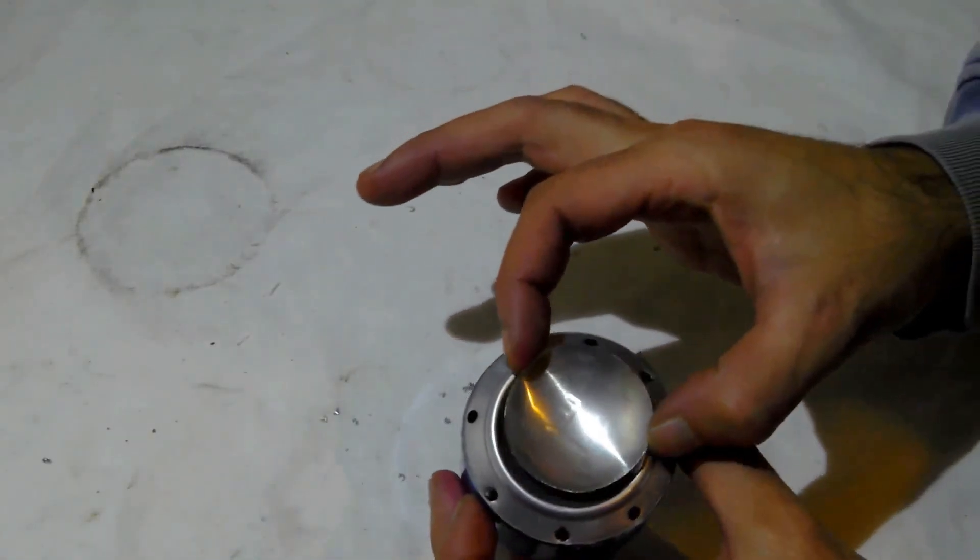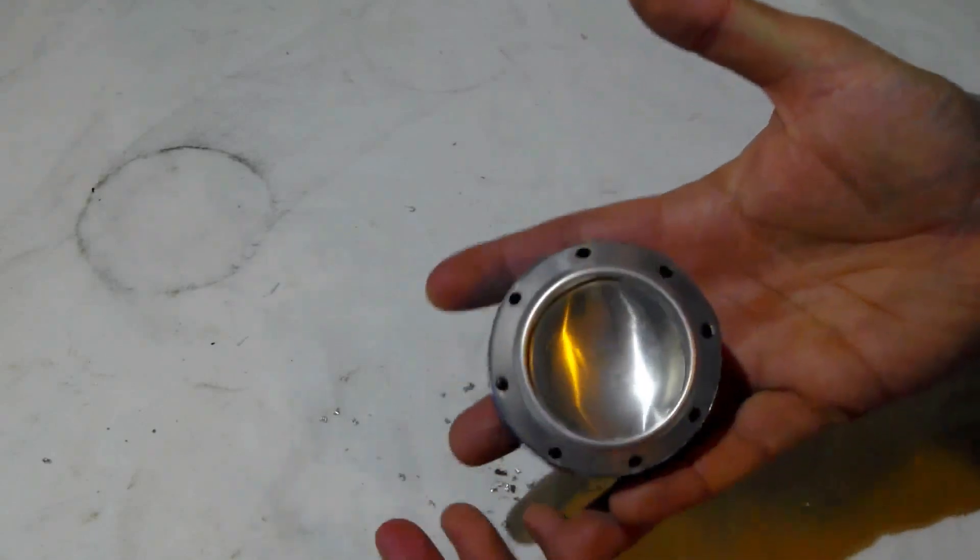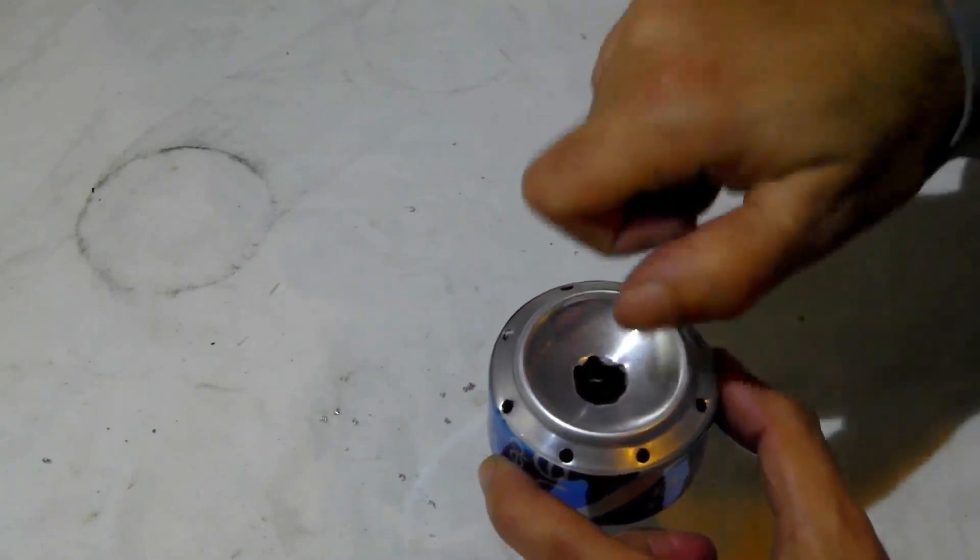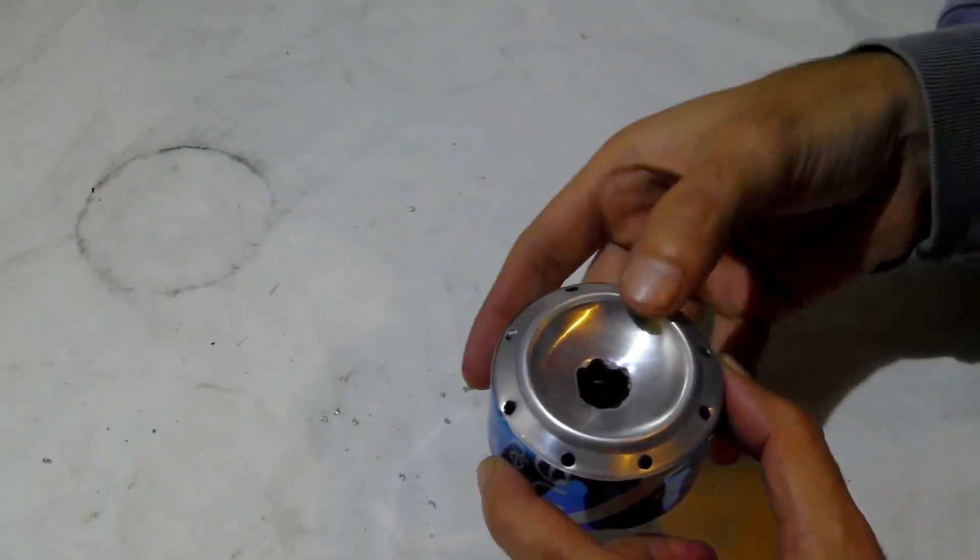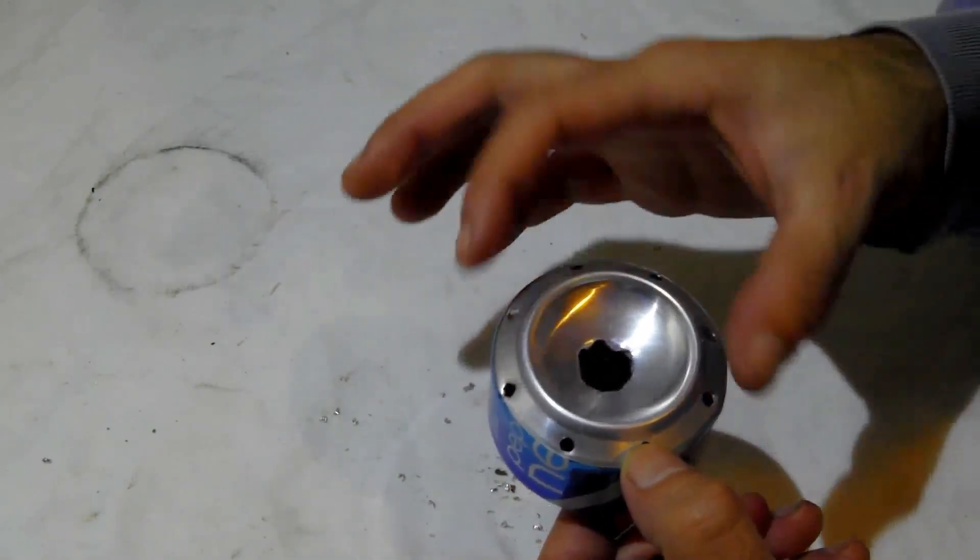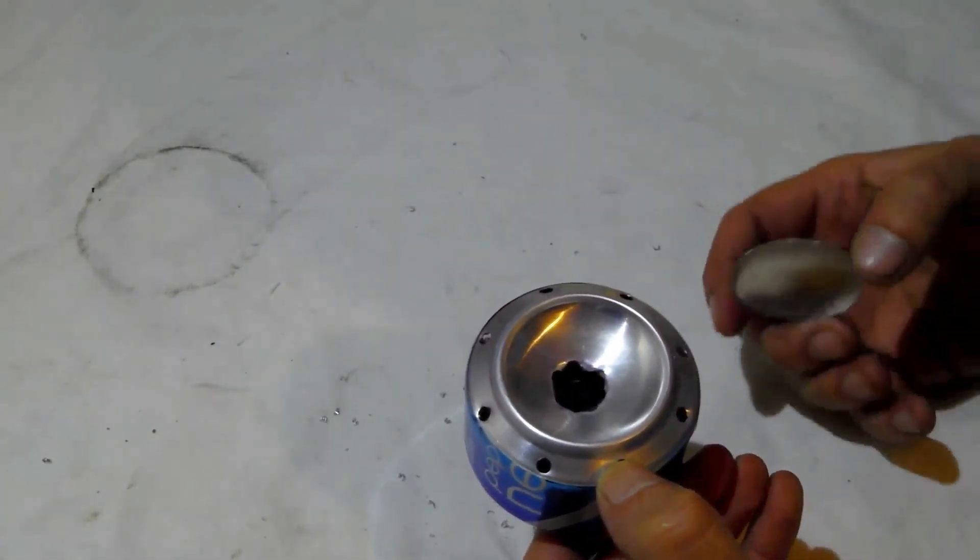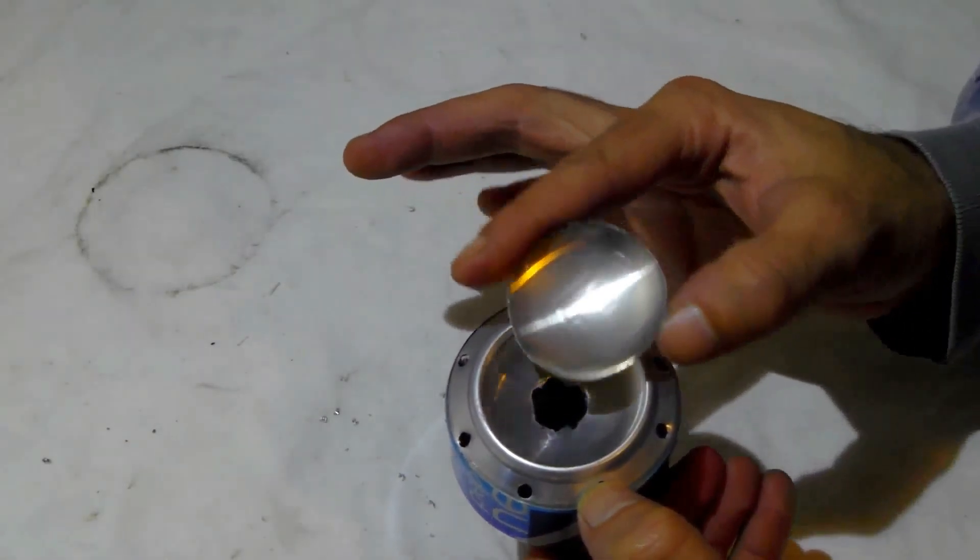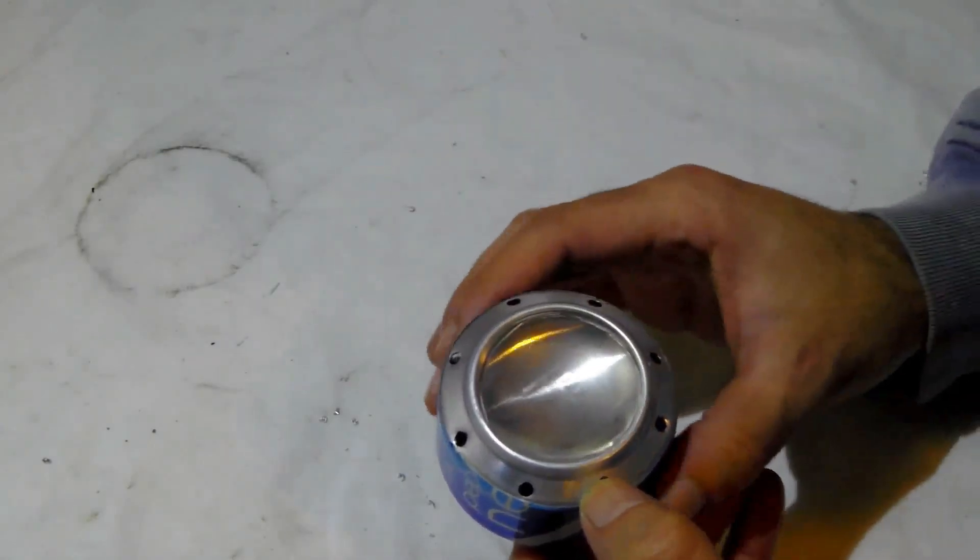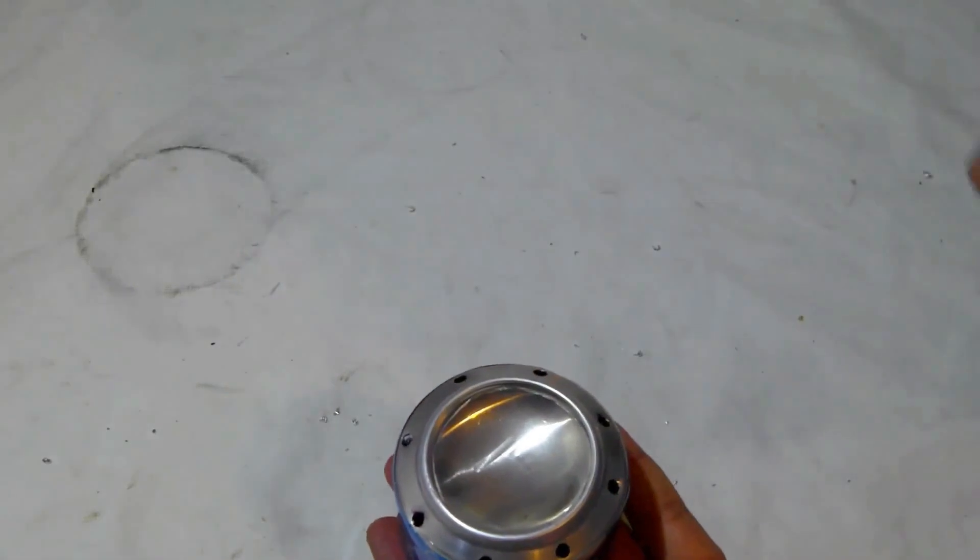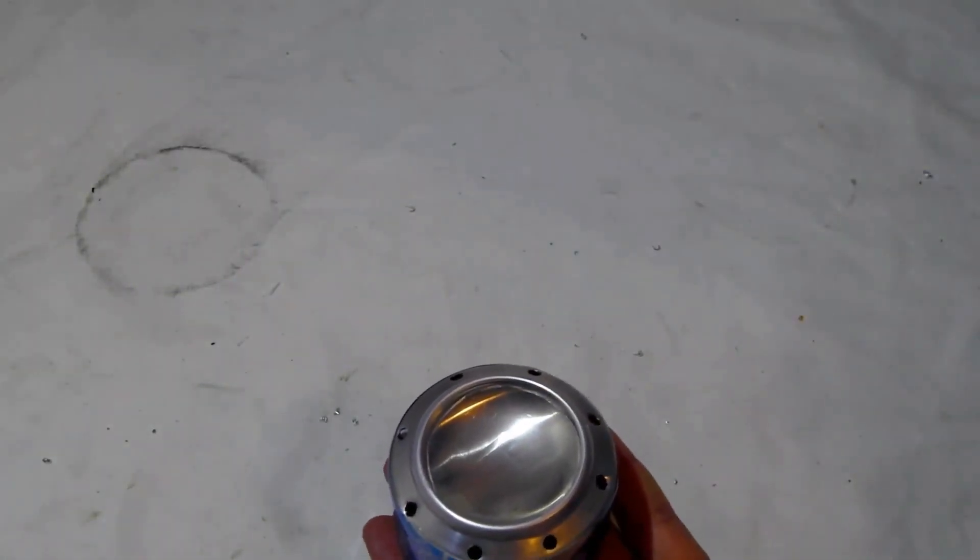And that then fits in there like so. You fill it up through there, light it through there, let it heat up for a minute or two. Once it heats up and the flames are getting quite tall, get your cover, slide it in and then proceed to light these edges and away you go.